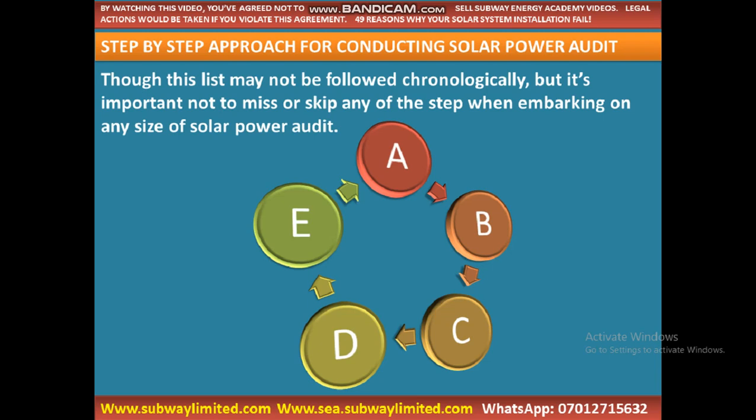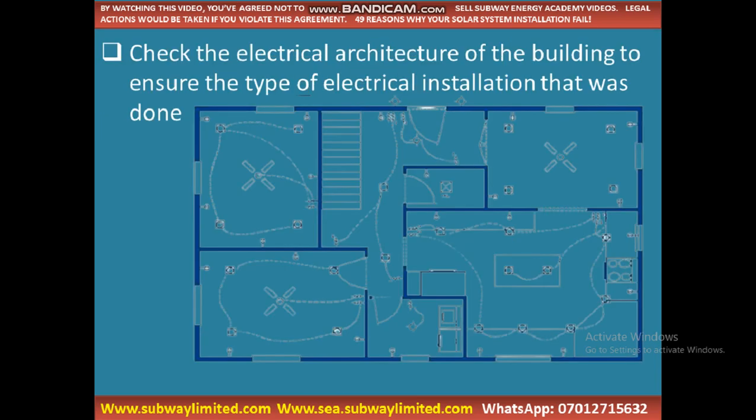When you are thinking of installing solar, the very first thing that guarantees success most times is how you go about your power audit. There is always a chronological order we follow. The very first thing is to check the electrical architecture of the building to ensure the type of electrical installation that was done.